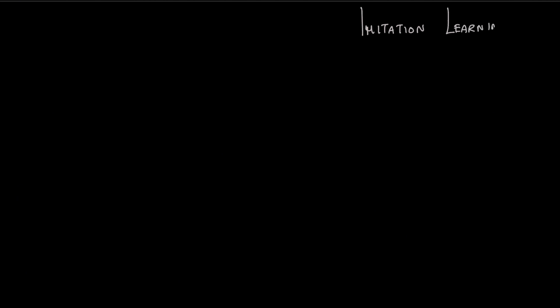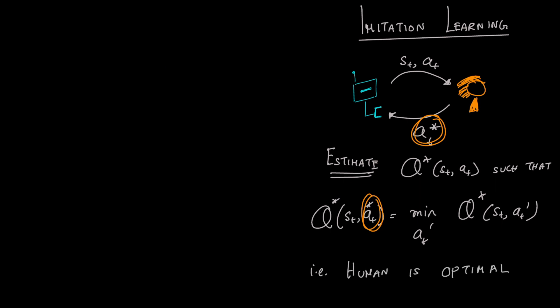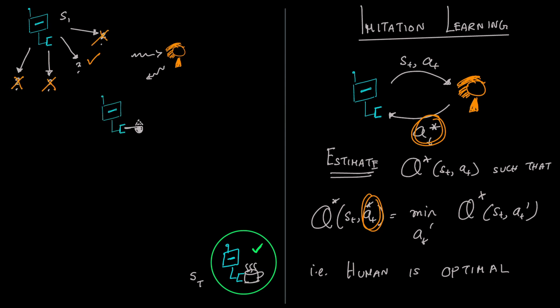The framework of imitation learning or IL looks at the interaction of the robot and the human. In this setting, the cost function is unknown in the mind of the human and the human may tell the robot the optimal action at any state. The goal is to estimate the optimal Q function such that the human action has lower value than any alternate action. Once again, the robot begins at an initial state and queries the human at every state it visits. The human says which action is good and which are bad, based on which the robot may choose to never explore the bad actions.